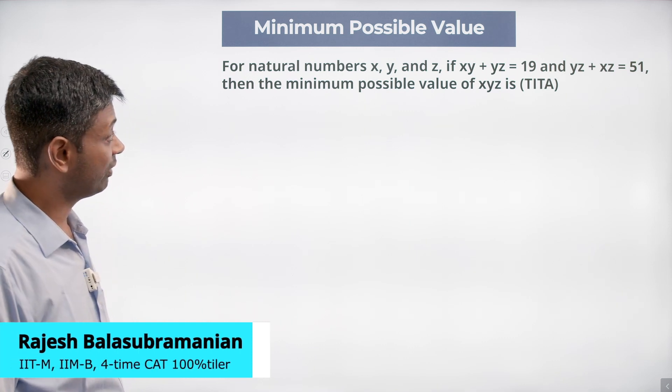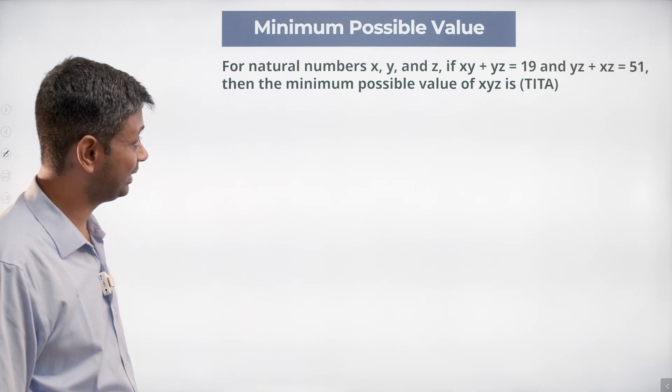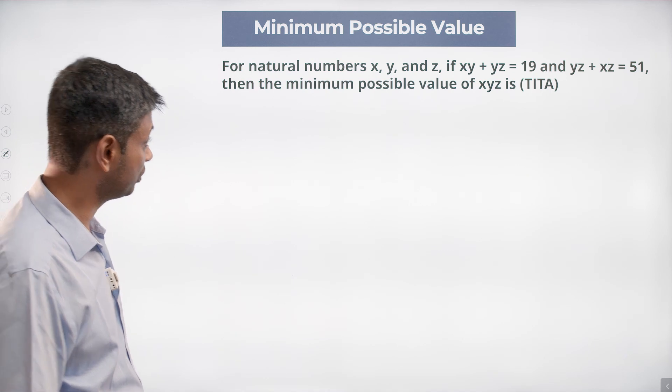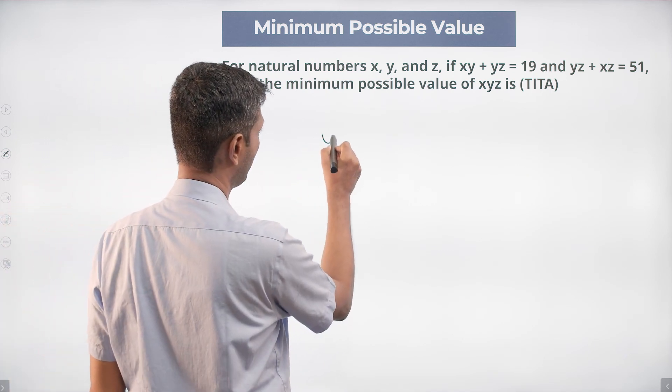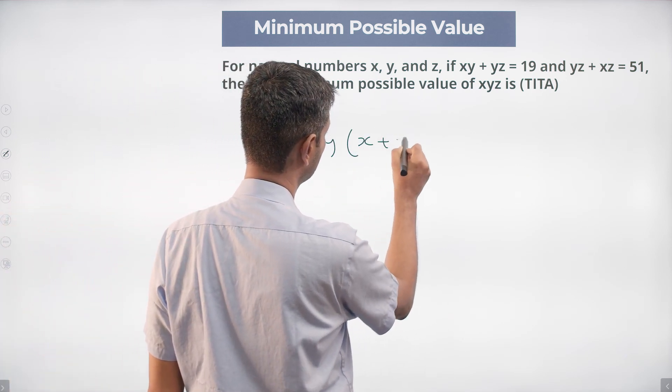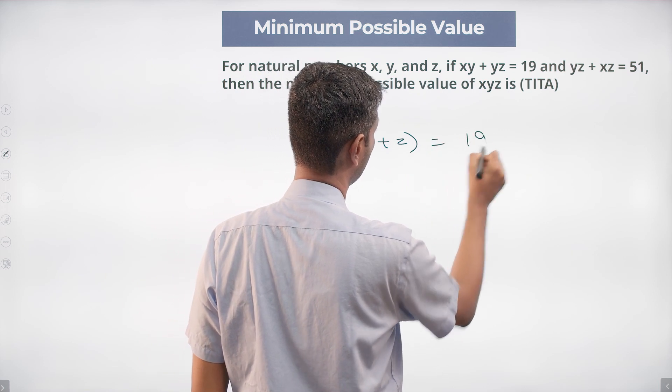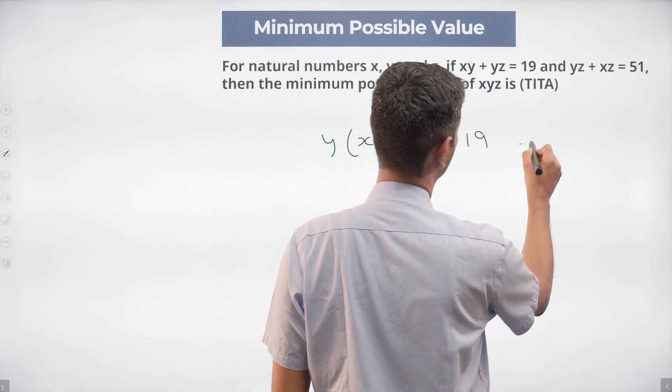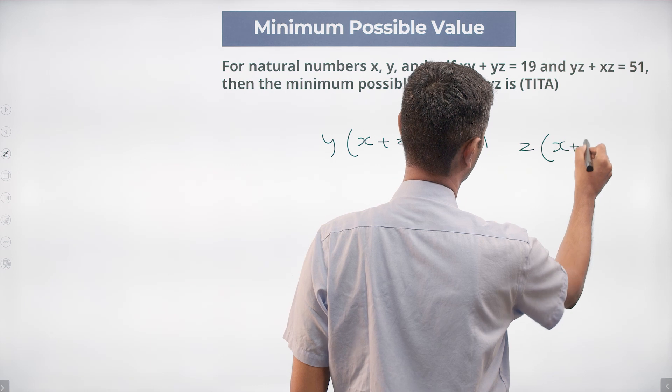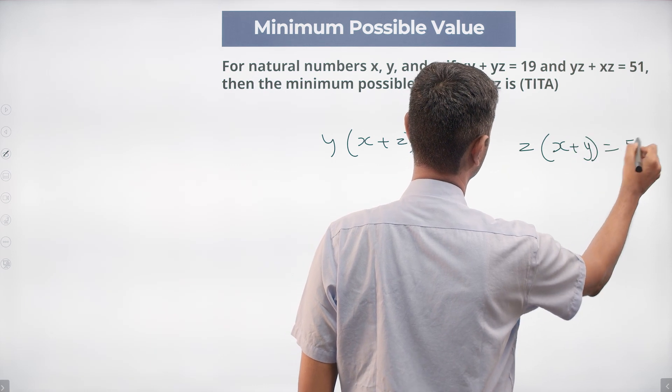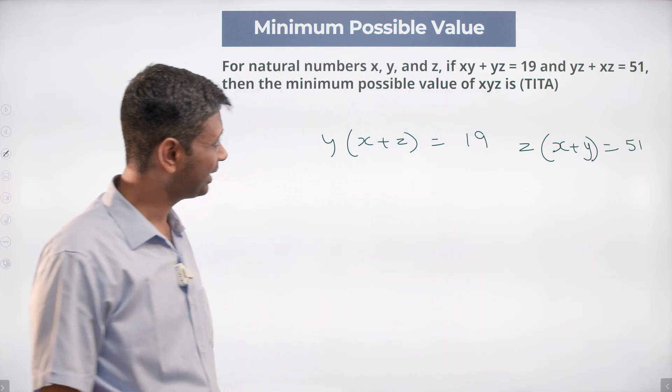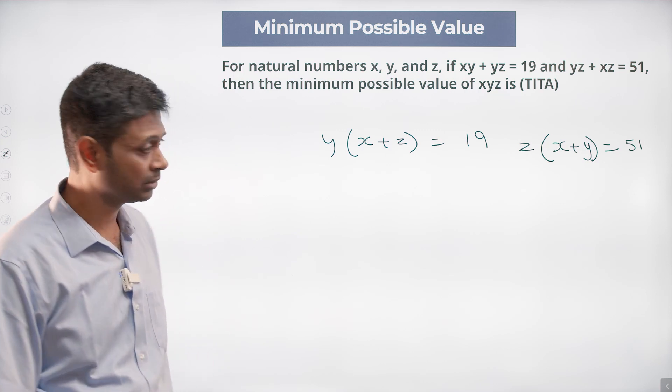For natural numbers x, y and z, if xy + yz is 19 and yz + zx is 51, then y into (x+z) is 19 and z into (x+y) is 51. They told very clearly that x, y and z are natural numbers.